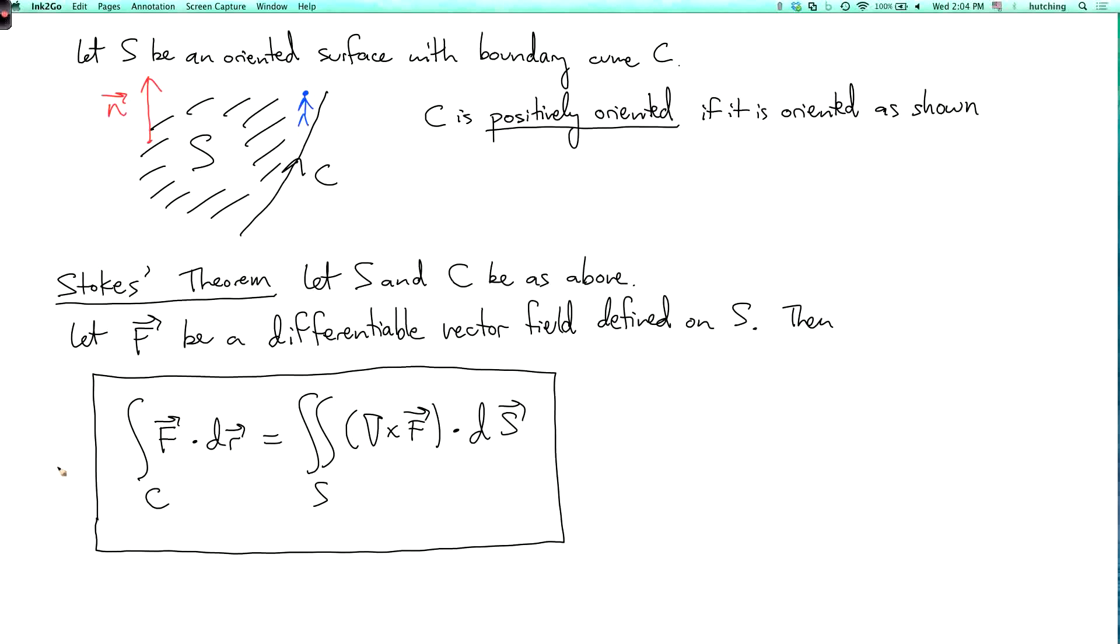The sort of physical interpretation of this, if you imagine that F is the velocity vector of a fluid, well then the left hand side here, this is the circulation of F around the curve C.